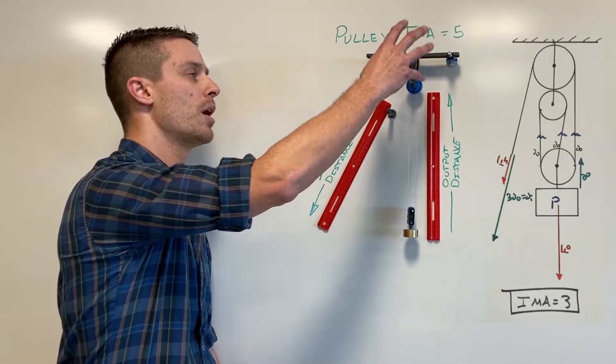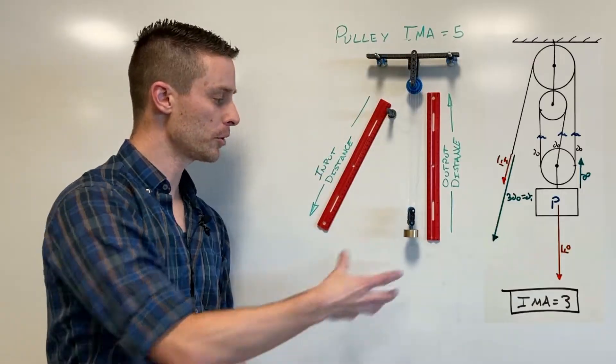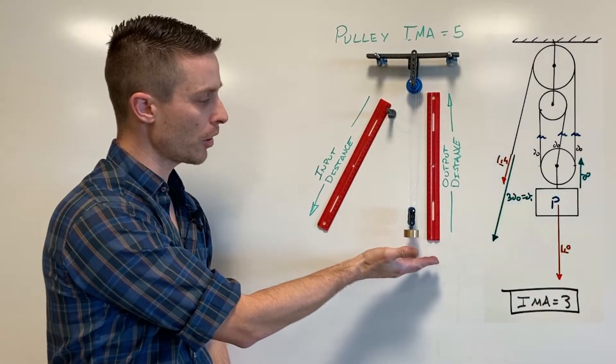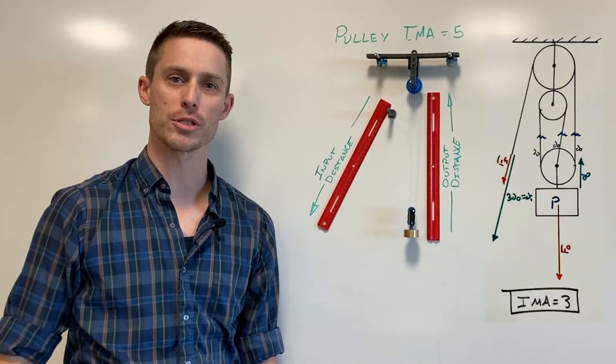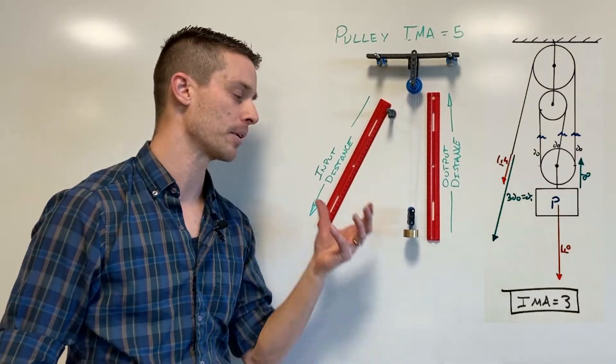Typically a diagram will just show a fixed end of a pulley with some little pulley wheels and then the active end or the load with some little pulley wheels on it and a couple of strings back and forth in between them and it doesn't get at what's really happening with a pulley.